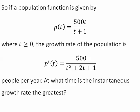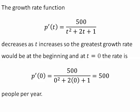At what time is the instantaneous growth rate the greatest? The growth rate function, p prime, decreases as t increases. So the greatest growth rate would be at the beginning. And at t equals 0, the growth rate is 500 people per year.